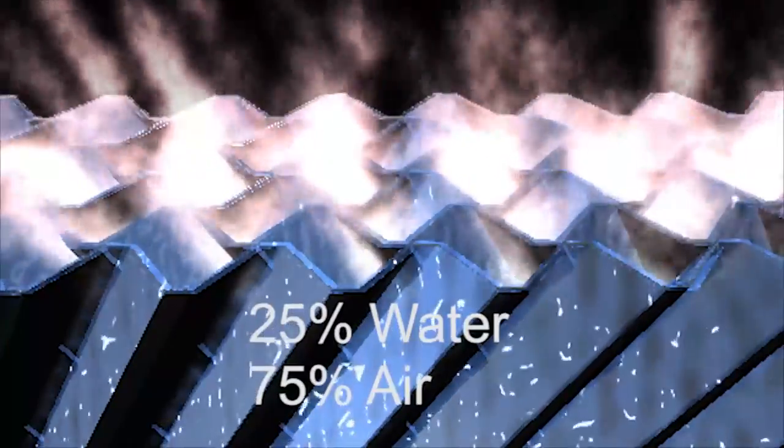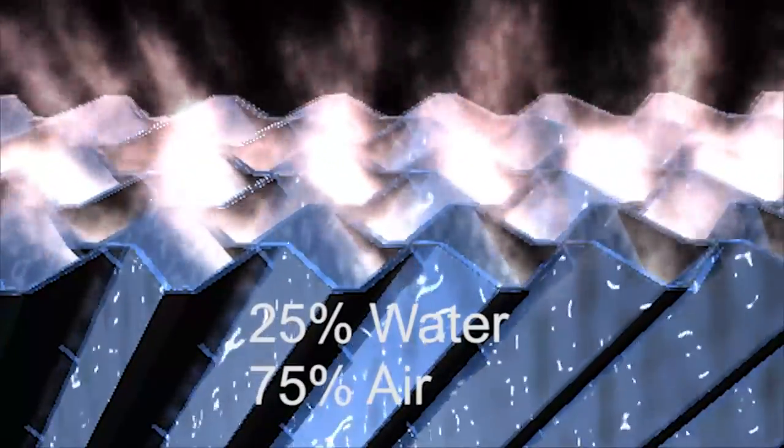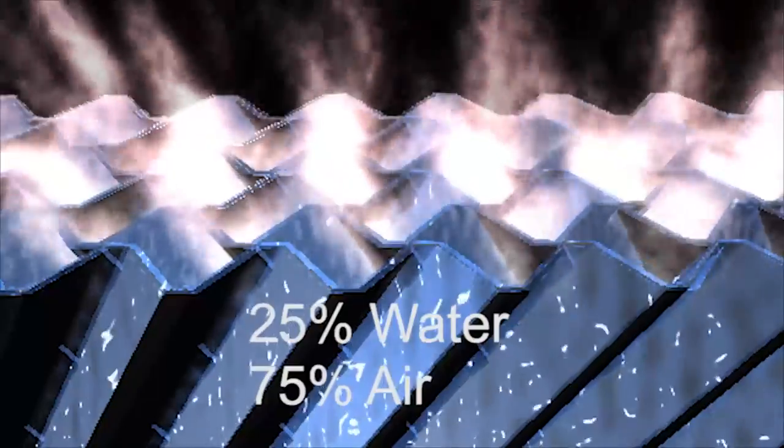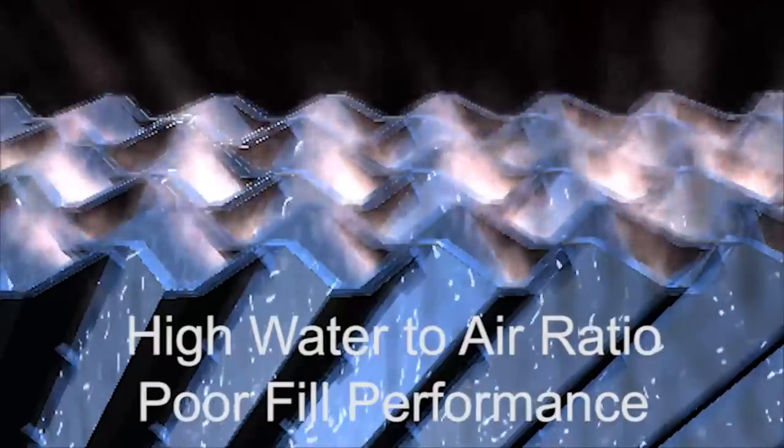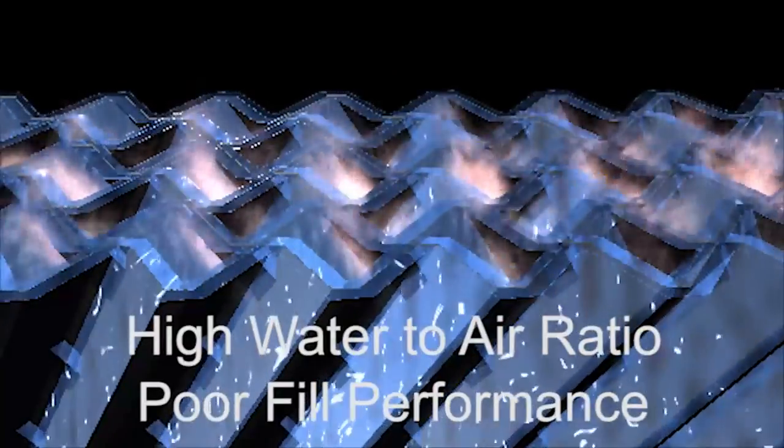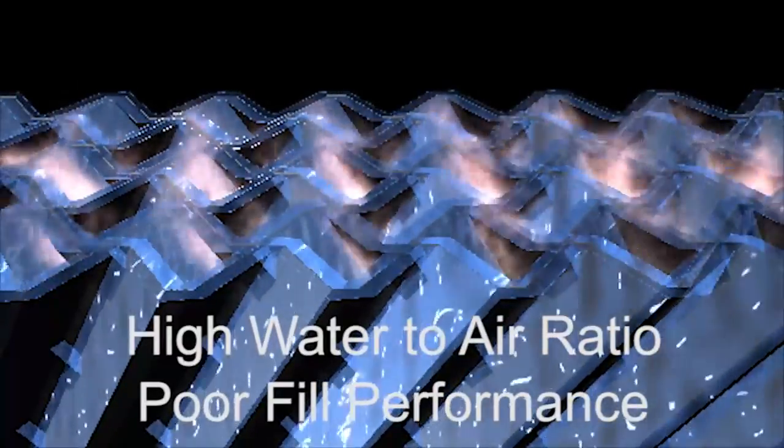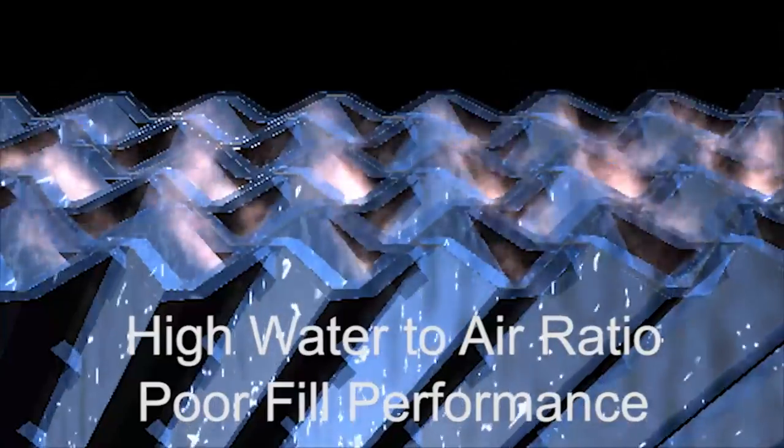So why does this matter? First let me tell you how film media works. Cellular film media consists of a series of corrugated flutes bound together to form a log. Each of these flutes, in essence, becomes a small cooling vessel specifically designed to accommodate 25% of the fluid opening being allocated to water loading and the remaining 75% fluid opening dedicated to air flow. Any deviation in this 1 to 3 ratio of air-to-water mixture will significantly degrade the performance of the cellular film media.